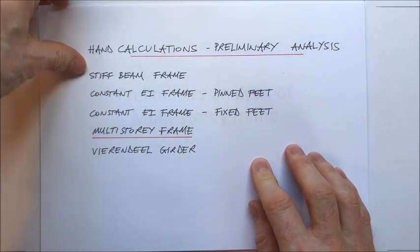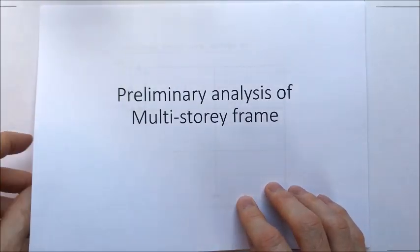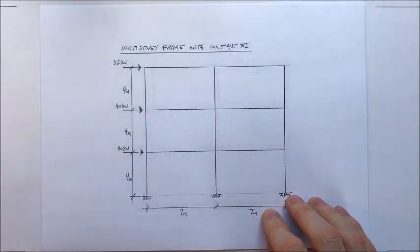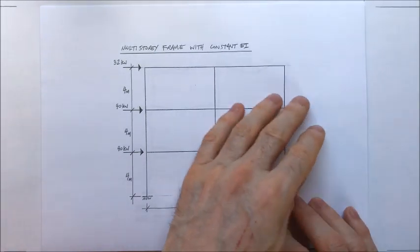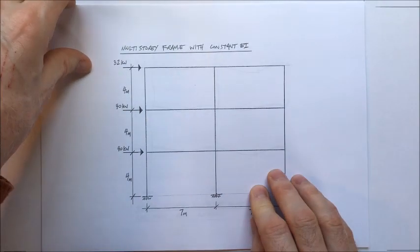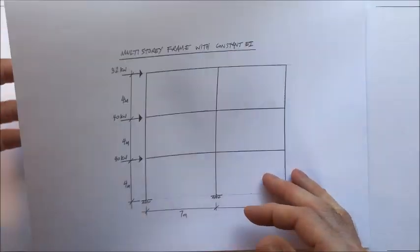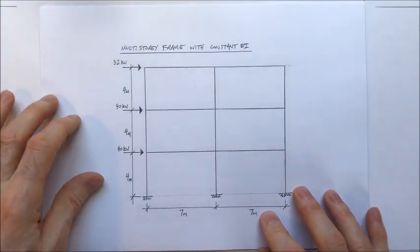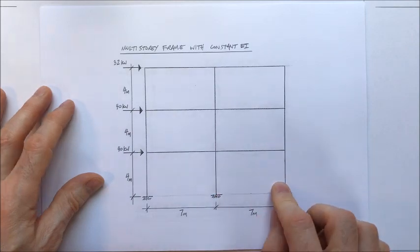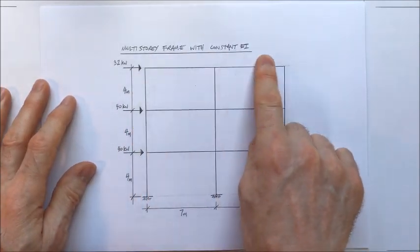So we're going to finish off multi-stories in this video, hopefully. Let's have a look at a two-bay, three-storey structure which is not that difficult to analyse, strangely enough. We typically start by considering the stiffness of different members and points of contra-flexure within beams and columns.